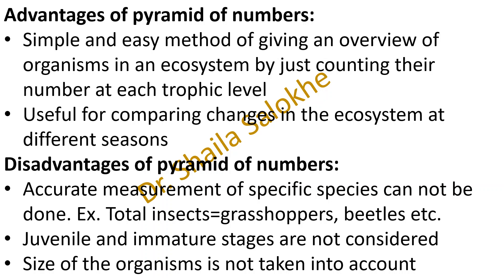The advantages of the pyramid of numbers: it is a simple and easy method of giving an overview of organisms in an ecosystem by just counting their number at each trophic level. It is useful for comparing changes in the ecosystem at different seasons, so seasonal variations can be seen. Disadvantages: accurate measurement of species cannot be done — for example, when calculating total number of insects, many types such as grasshoppers and beetles are not distinguished by species.